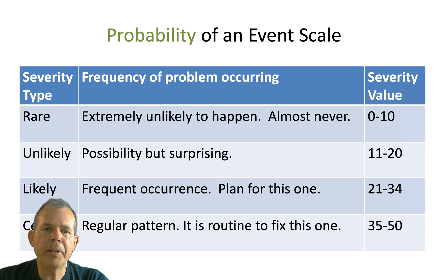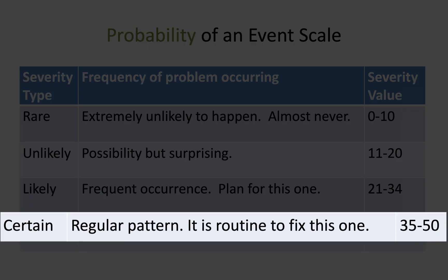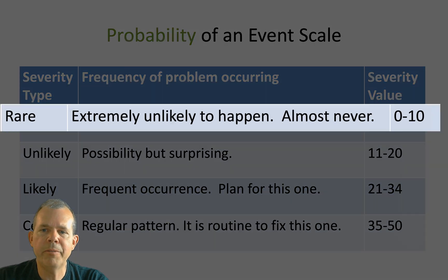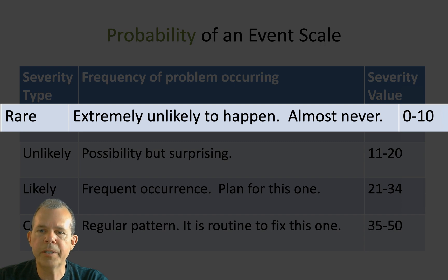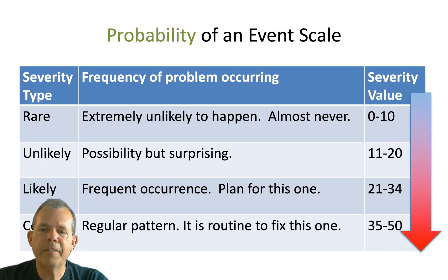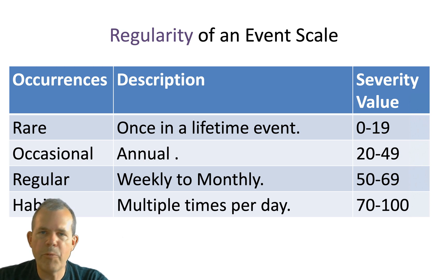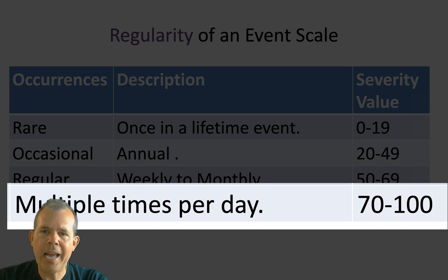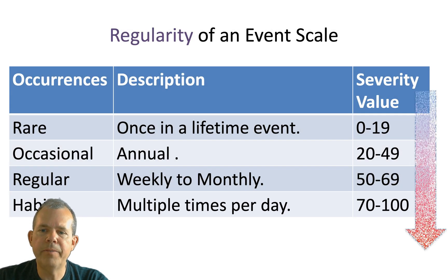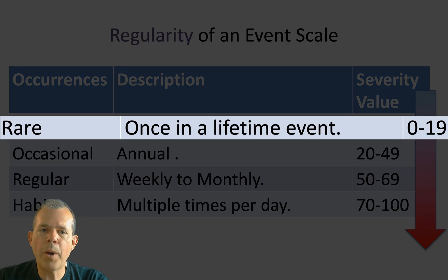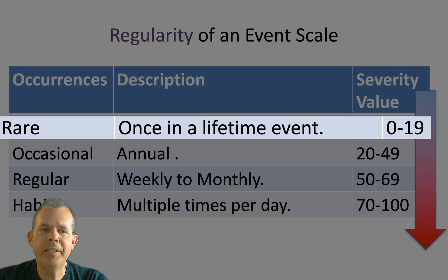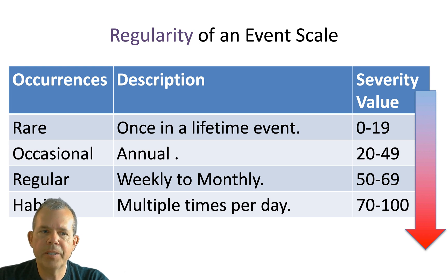Severity doesn't mean something happens every day, so we also think about probability. If something is probable every day, we call it certain — that's the bottom of our scale. If it's very rare and almost never happens, we give it the top value. I'm choosing a scale from 0 to 50 for probability. The regularity of an event is just as important. If you are putting yourself at risk every single day, we call that a habit — near the 100 value. A once-in-a-lifetime event has a regularity near 0.